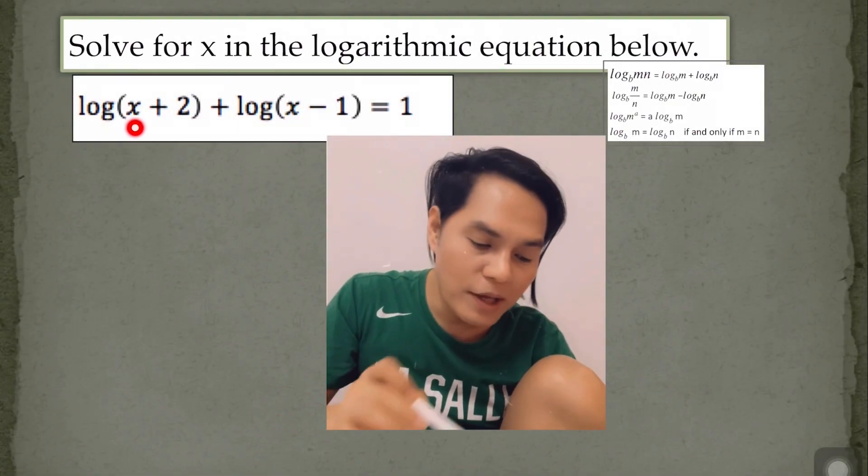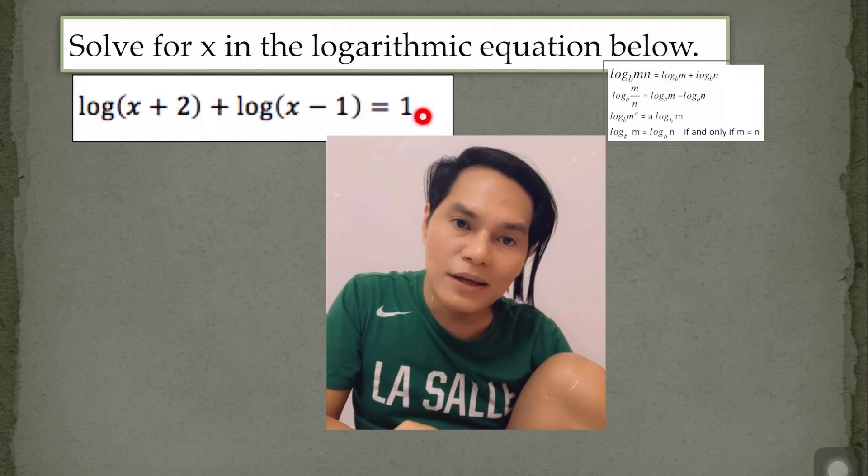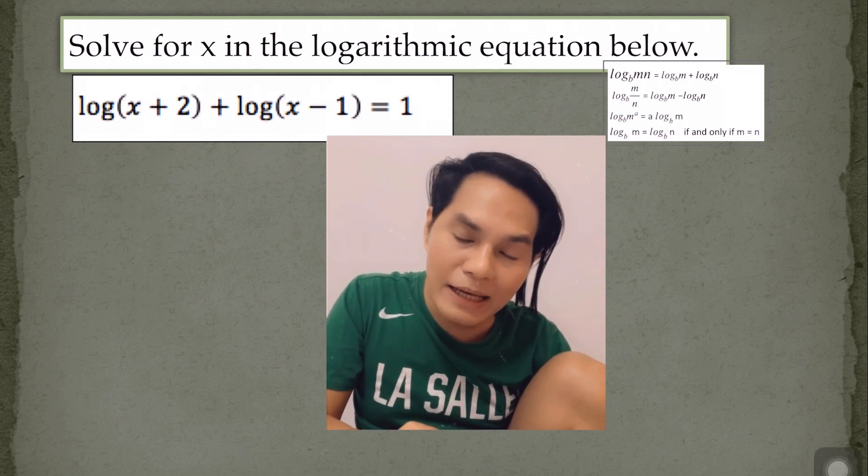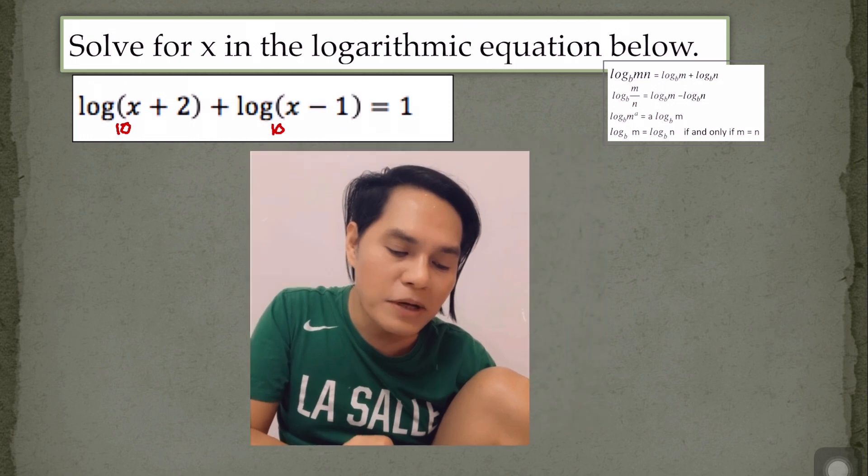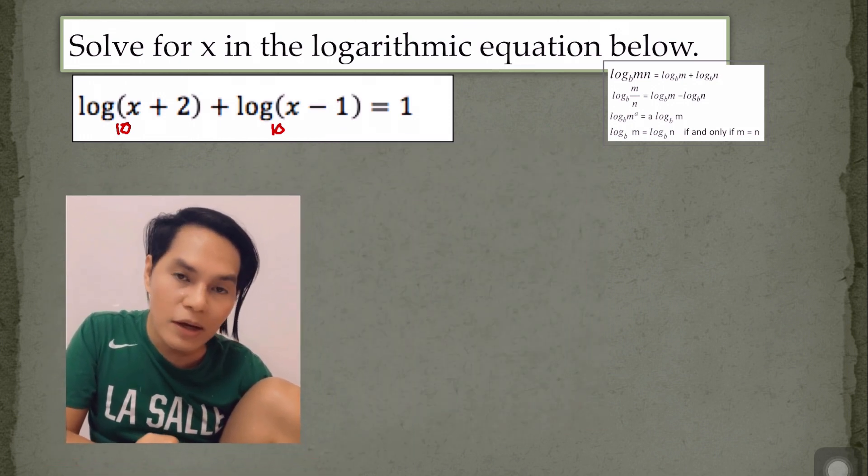We are down to our last example here. Look at the given equation. This one doesn't have the base. And if that is the case, then the base here is considered as 10. So since this is addition, we can simply rewrite this one into multiplication.